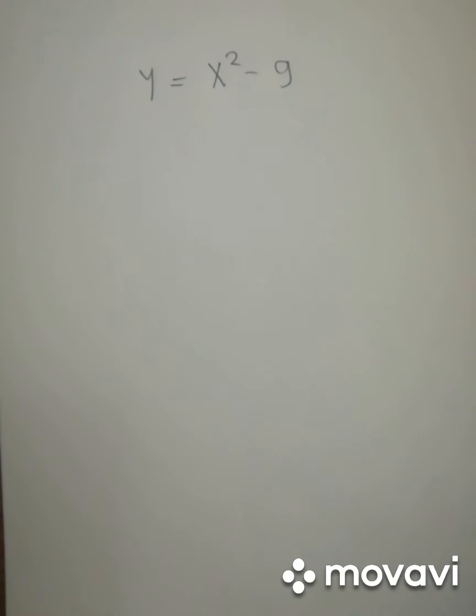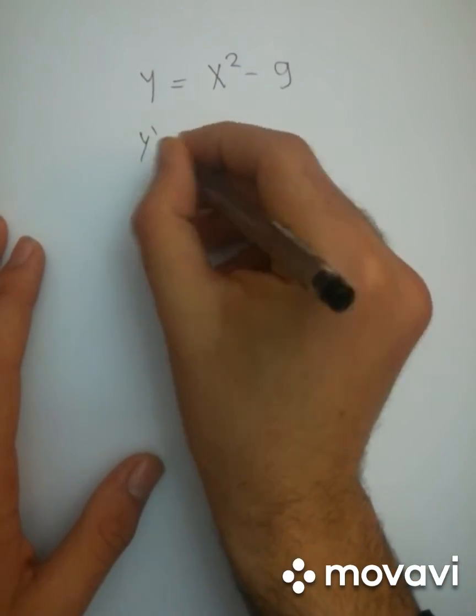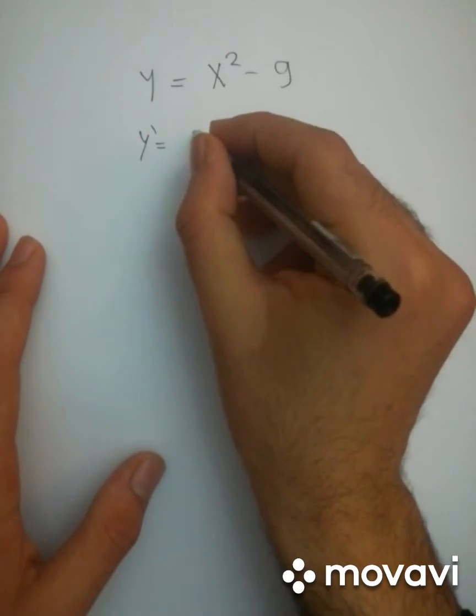One way to solve this is to actually draw the function. But as we will see, there will be more complicated functions, and so we need to know how to solve this algebraically. And so we have to differentiate this function, and so we're going to get 2x. So this is the derivative of this function at any point.